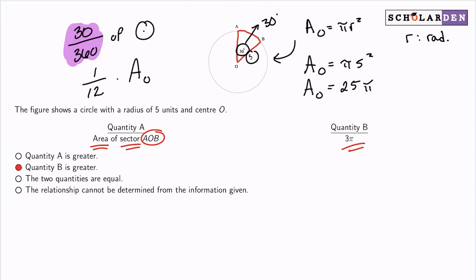So again, that's the area of the circle, and what we said that we would do is take that sector, so that 30 out of 360, multiply it by the area of our circle to get our complete answer. So this will be 25π divided by 12.